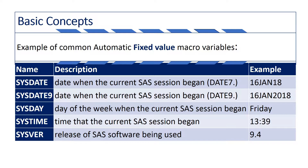For automatic macro variables, we have fixed value. This is an example of a macro variable with a fixed value — for example, SYSDATE. If the SYSDATE I'm running this macro is January 16th, when I open my SAS session, each time I call this macro I will have exactly the same value. That's why we call it a fixed value — because the value stays the same.